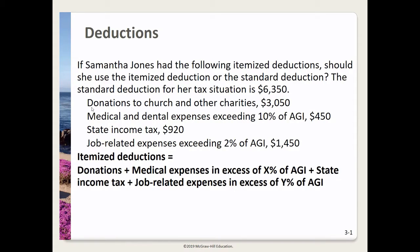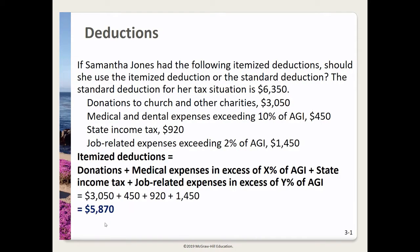We're given information about the various itemized deductions available to her. We'll use this formula and simply add up all the different itemized deductions, then compare that against the standard deduction. We'll take donations plus medical expenses in excess of 10% of adjusted gross income, then add state income tax, then add job-related expenses in excess of 2% of AGI. Taking our numbers: $3,050 plus $450 plus $920 plus $1,450, we get $5,870.